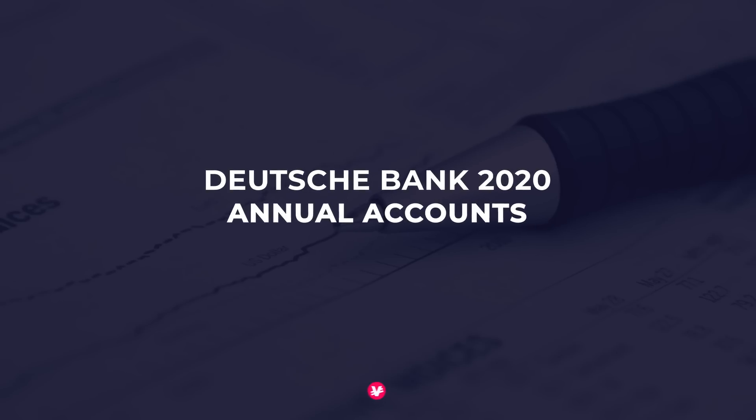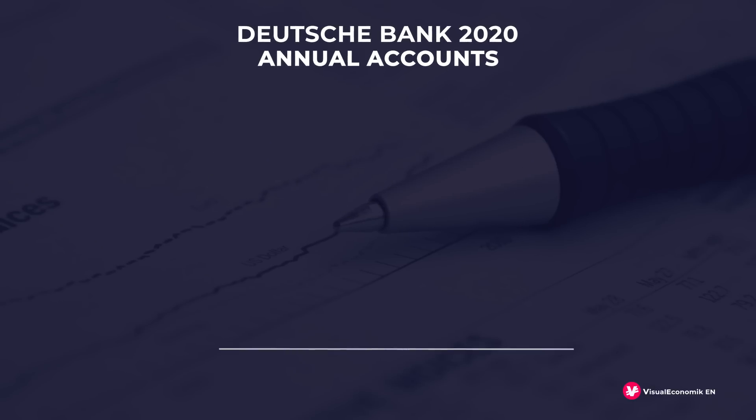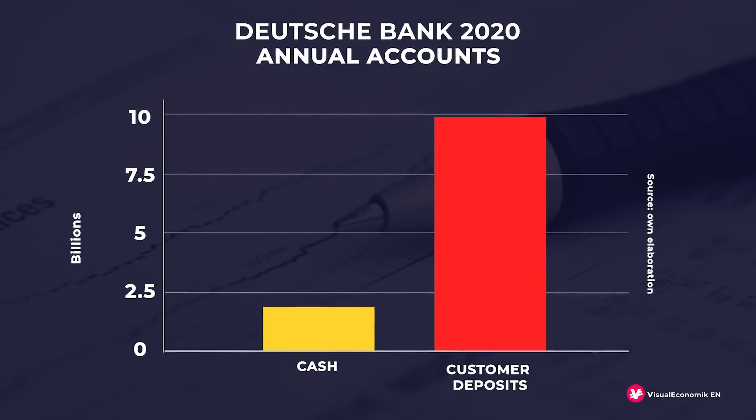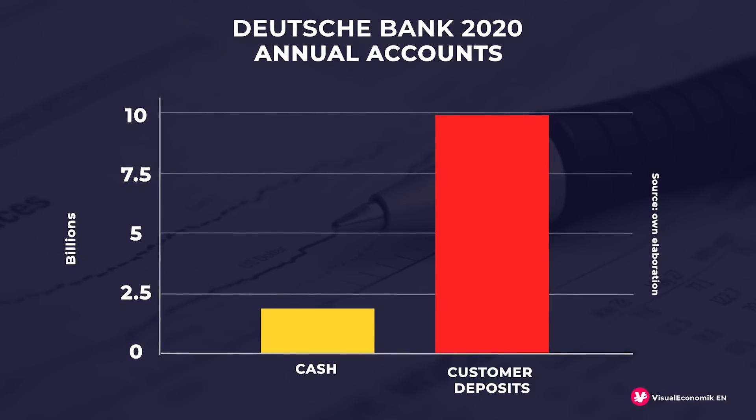If we study the accounts of any bank — for example, Deutsche Bank — we will see that the money they actually have in their hands is much less than the deposits of their clients. Why on earth are banks allowed to take money out of thin air? Are they cheating us and taking advantage of the fact that most people don't know how the banking system works? Should we march en masse to take our money out? Today on Visual Economic, we will answer all of these questions, so don't rush to the bank just yet.